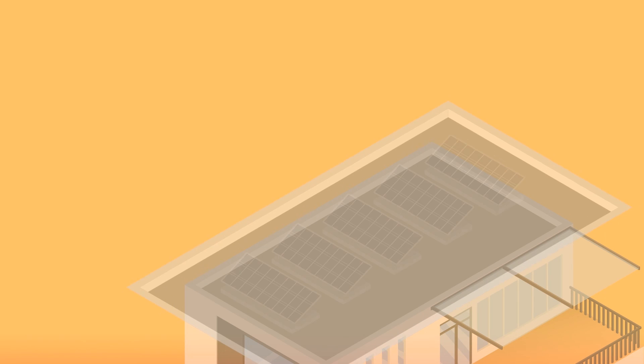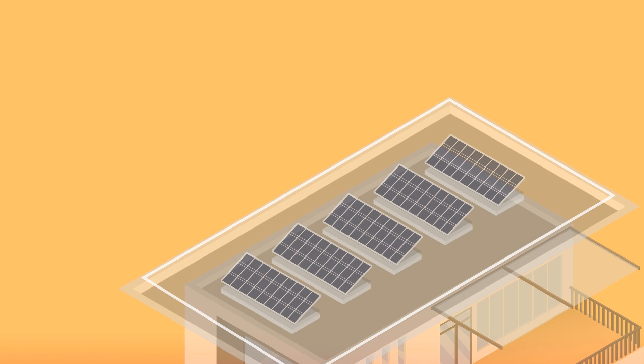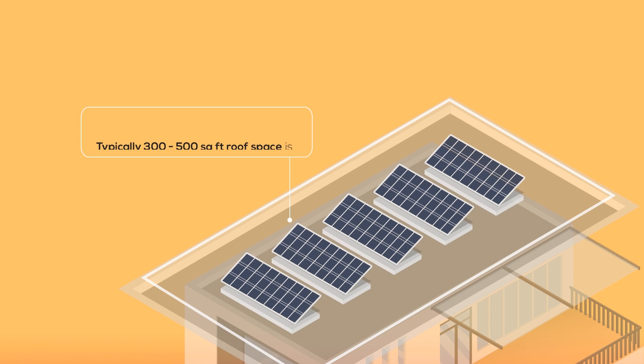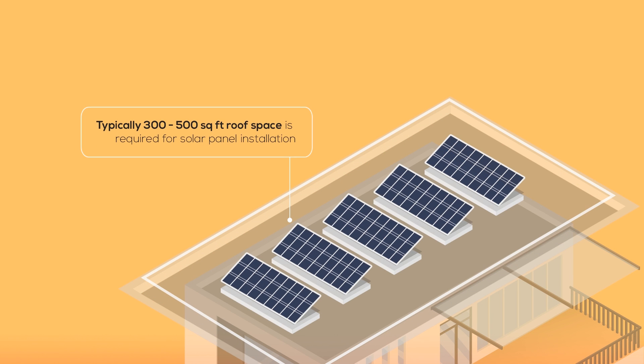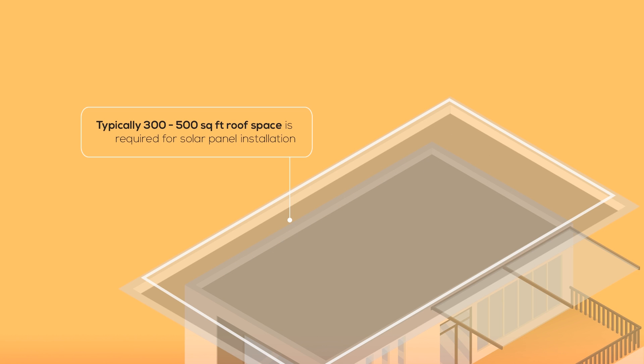A typical Indian home system with three to five members will require about 300 to 500 square feet of space.